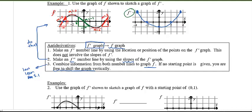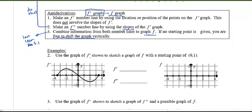Example number two: I'm going to use this graph of f prime — it's now labeled f prime. I want us to sketch the original function f with a starting point of (0, 1). To go from f prime to f we need those number lines. Looking at f prime, I find critical numbers where it equals zero: at x = -3.5, at x = 0, and at x = 3.5. These are where the derivative equals zero.